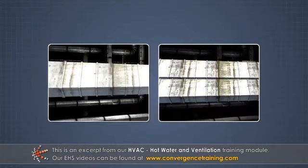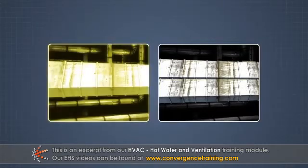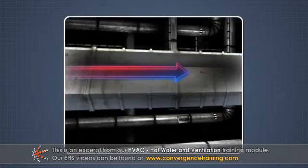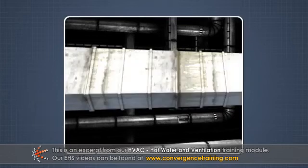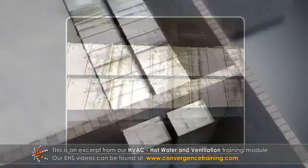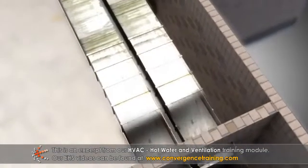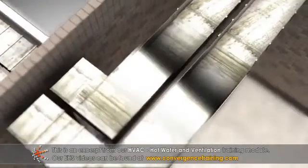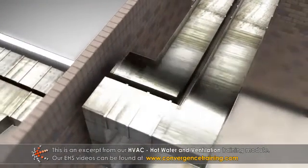All air systems can be single duct or dual duct. Single duct systems provide cooling and heating using the same duct, but cannot provide them simultaneously. Dual duct and multi-zone systems can provide heating and cooling simultaneously. A dual duct system employs two air ducts — a cold air duct and a warm air duct — which run parallel to each other.